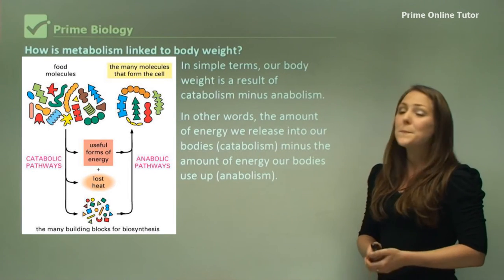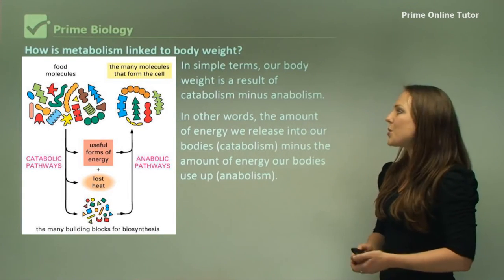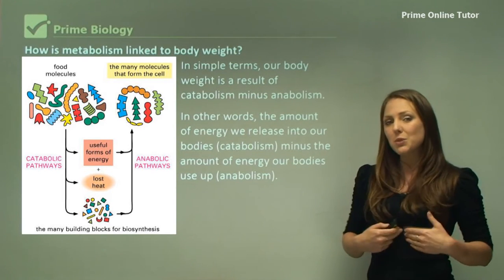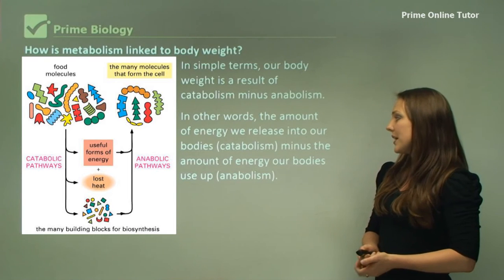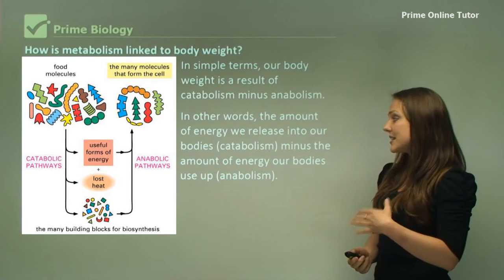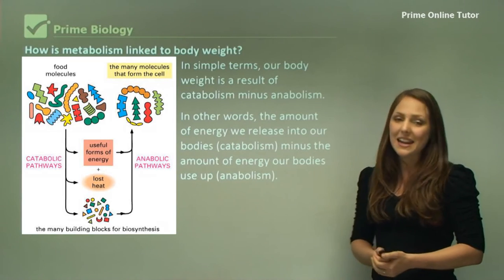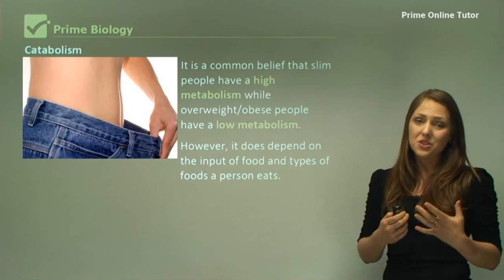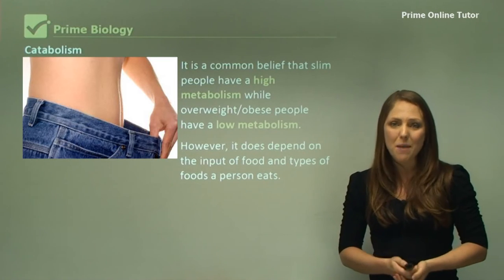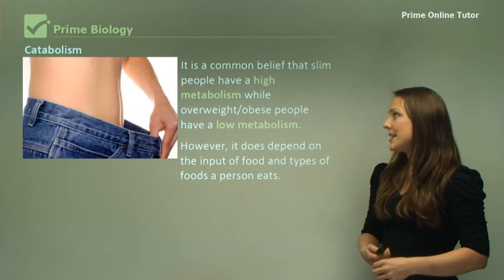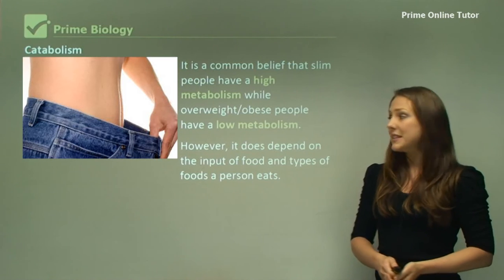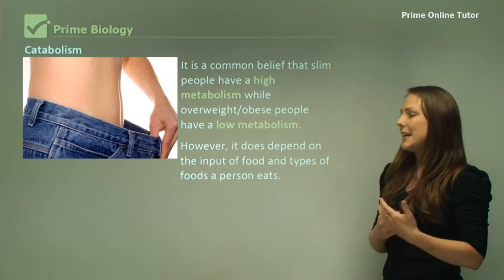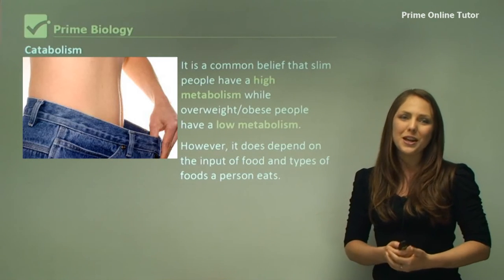In simple terms, our body weight is actually a result of catabolism minus anabolism — in other words, the amount of energy we release into our body (catabolism) minus the amount of energy that our body uses up (anabolism). So it's a common misconception that slim people have a high metabolism while overweight or obese people have a low metabolism. That's not necessarily the case; however, it does also depend on the input of food and types of food that a person eats.